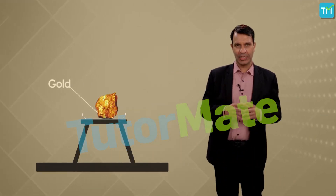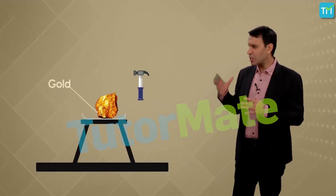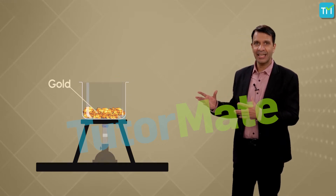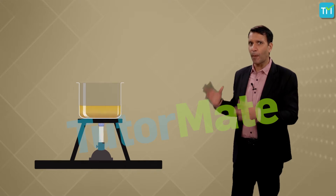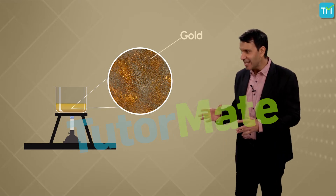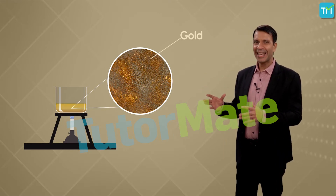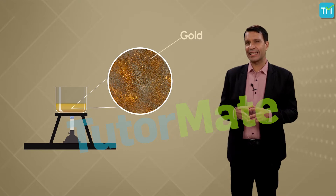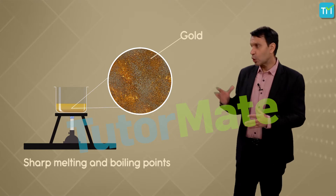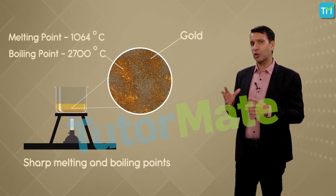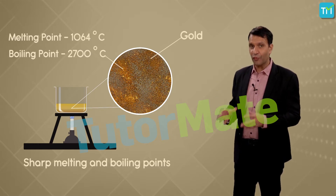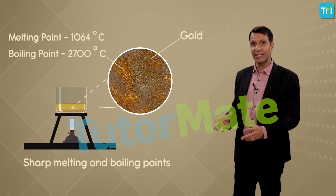Let's take gold for example. If we were to smash a piece of gold into smaller pieces or heat it, the piece still retains all the properties of the element gold, which means the atoms are still gold. Another distinguishing feature of elements is that they have sharp melting and boiling points. Gold has a melting point of 1064 degrees centigrade and a boiling point of 2700 degrees centigrade.